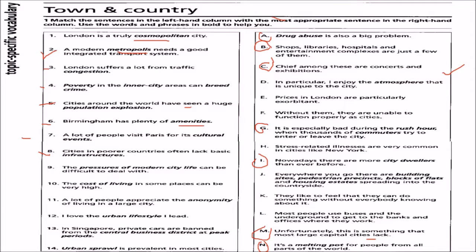Eight: cities in poor countries often lack basic infrastructure. We match it with F — without them they are unable to function properly as cities.